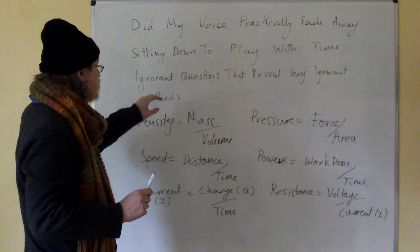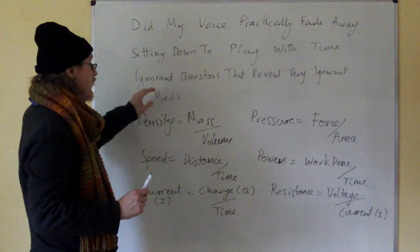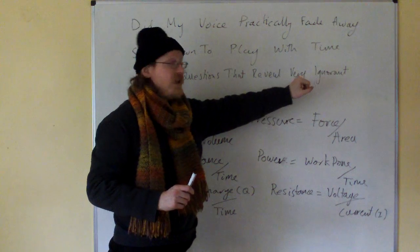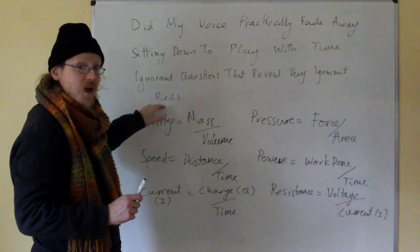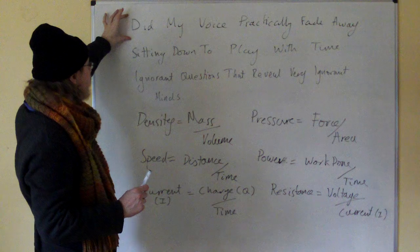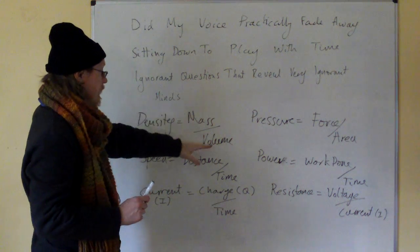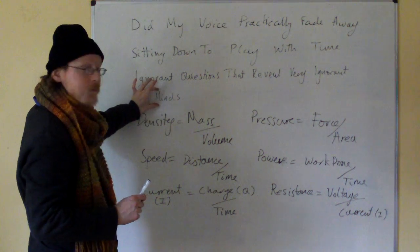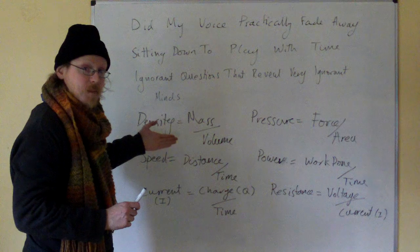Now, 'minds' is left over — 'ignorant questions that reveal very ignorant minds.' The D tells us that we are dividing. The M tells us that we are now about to multiply.